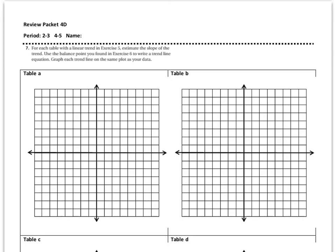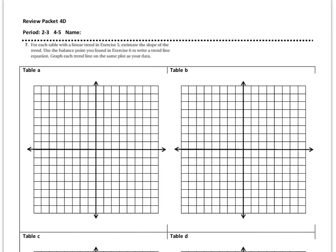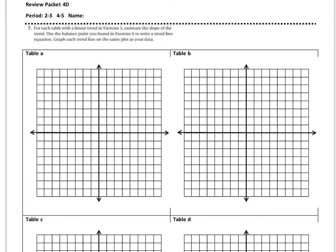And problem number 7, for each table with the linear trend in exercise 5, estimate the slope of the trend. Use the balance points you found in exercise 6 to write a trend line equation. Graph each trend line on the same plots as your data.